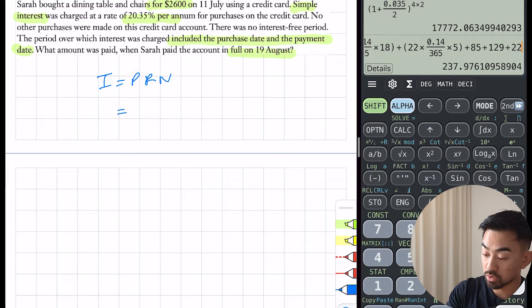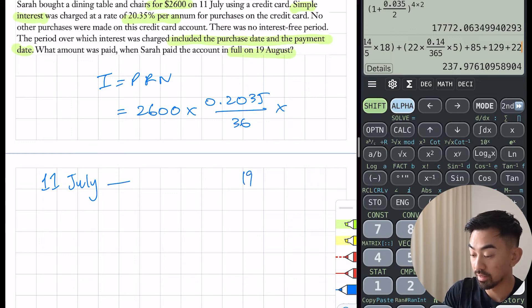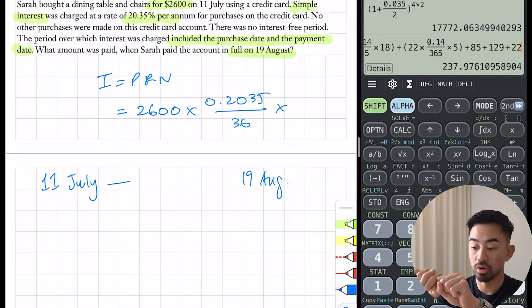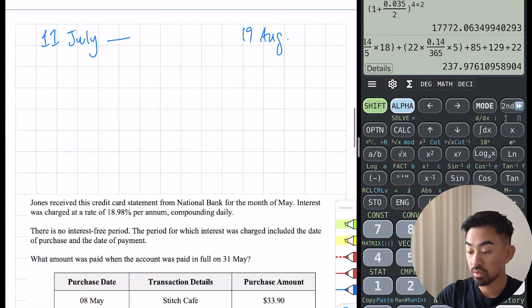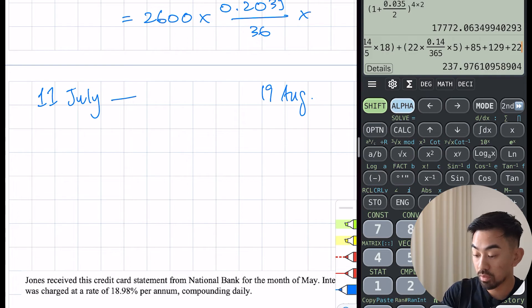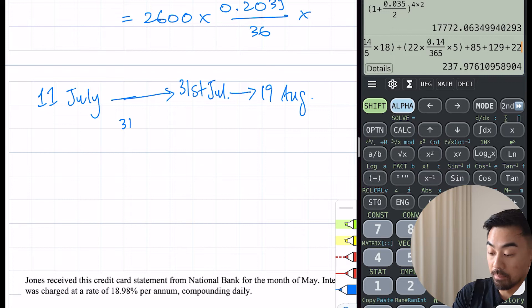Because I know it's simple interest, I'm going to start with I = PRN and put my numbers in. It's 2600 times 0.2035 over 365. Now I need to work out the number of days. I'm going from the 11th of July and I need to get to the 19th of August. Do your knuckle method - July has 31 days. Before I even get to the 19th of August, I need to get to the 31st of July.